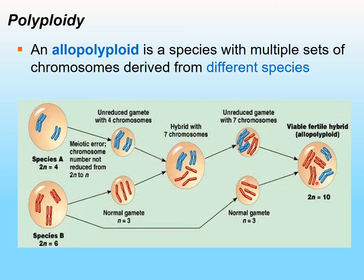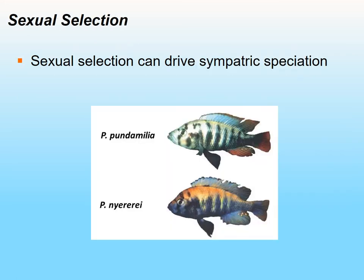Polyploidy can result in speciation — the products of these combinations cannot mate with the parent species, so they become a totally different species over time.